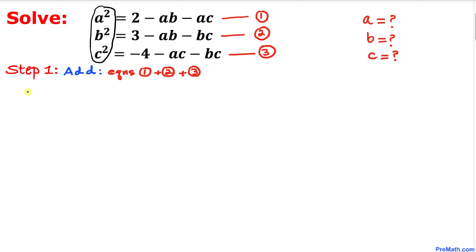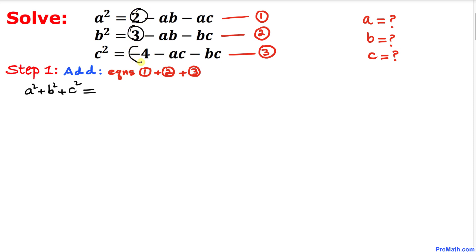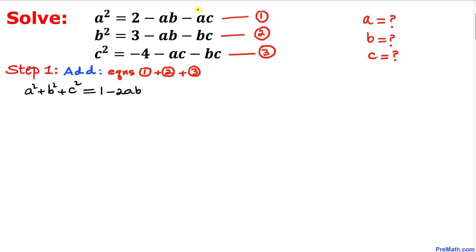On the right hand side, let's add 2 plus 3 plus negative 4 — these add up to simply 1. On the left hand side, negative ab and negative ab gives us negative 2ab.